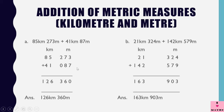7 plus 3 is 10 — 0 and 1 carry over. 7 plus 1 is 8, and 8 plus 8 is 16 — 6 and 1 carry over. 2 and 1 is 3, 5 and 1 is 6, 8 and 4 is 12. So the answer is 126 kilometers 360 meters.